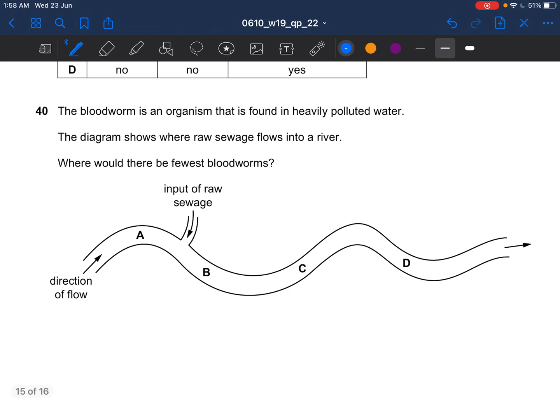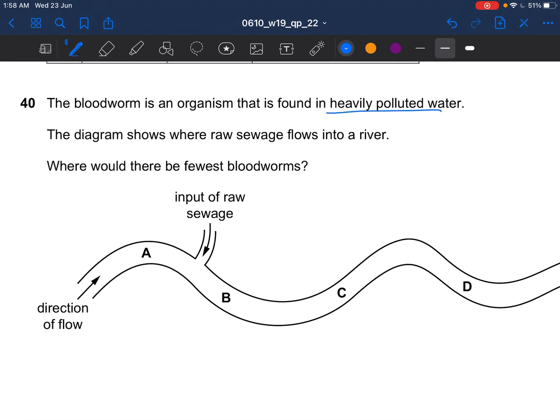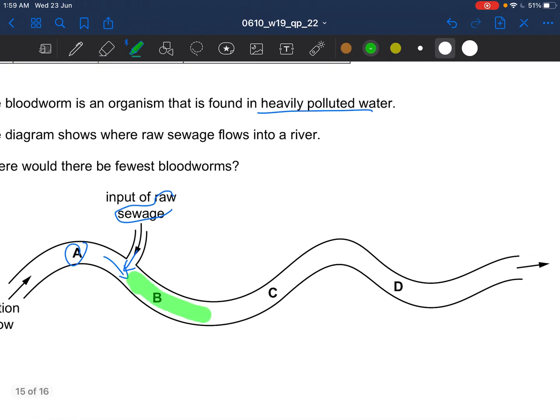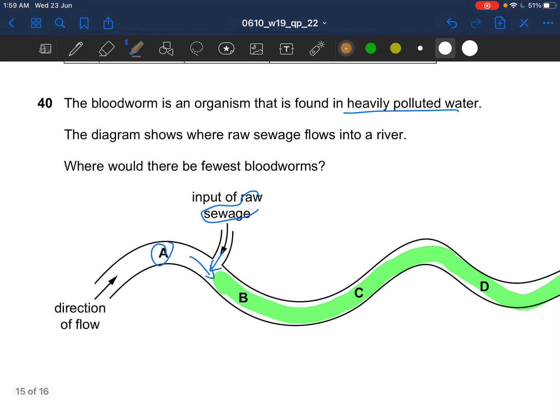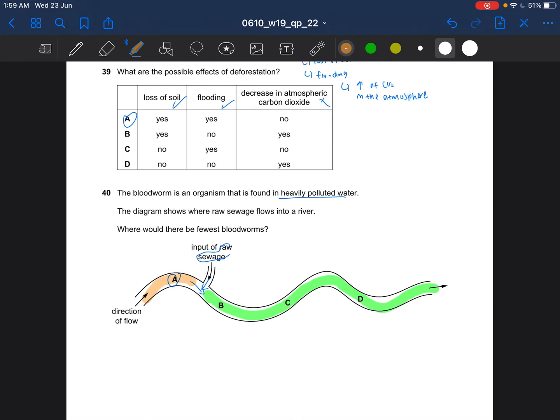Next question, the bloodworm is an organism that is found in heavily polluted water. The diagram shows where raw sewage flows into a river. Where would there be the fewest bloodworms? Raw sewage is heavily polluted water. So A would have the fewest bloodworm, as it is released over here. Then the water would flow over here. So this whole region would have a lot of bloodworms, and this one would have the least, the fewest. So the answer would be A. And that's all. Bye.